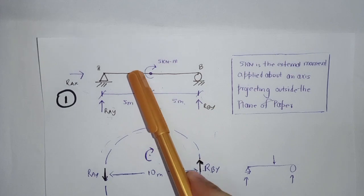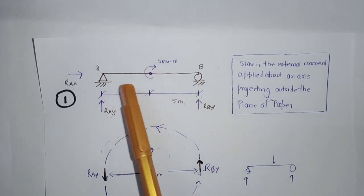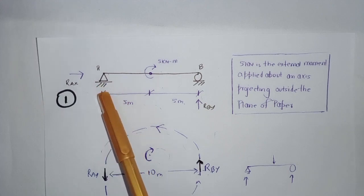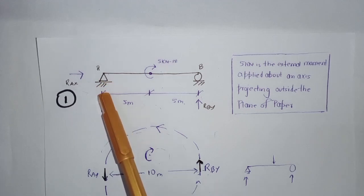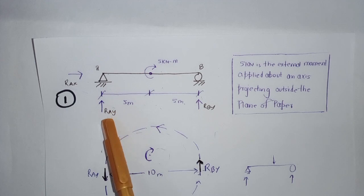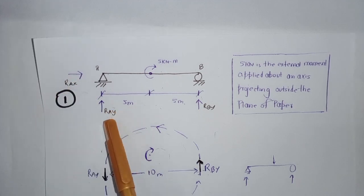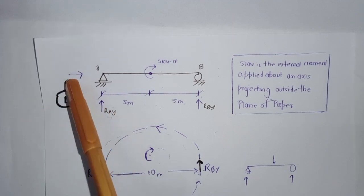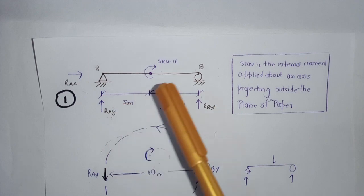In this case, we have an externally applied moment at the midspan of the simply supported beam. At point A, we have a hinge support. A hinge support is a support which resists forces in the vertical as well as in the horizontal direction. So let's represent the vertical force by RAY and the horizontal force by RAX, and assume that RAY is acting upward and RAX is acting to the right.